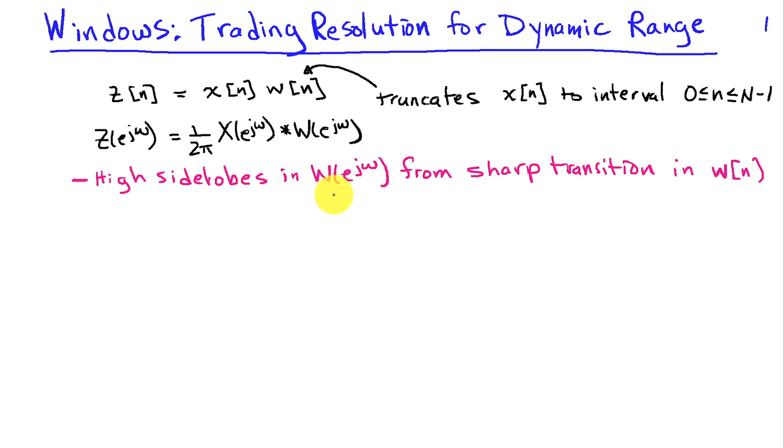We also had that the main lobe width for this particular window was 4 pi divided by capital N. We saw that by increasing N, we could make the resolution, or the main lobe width, smaller.